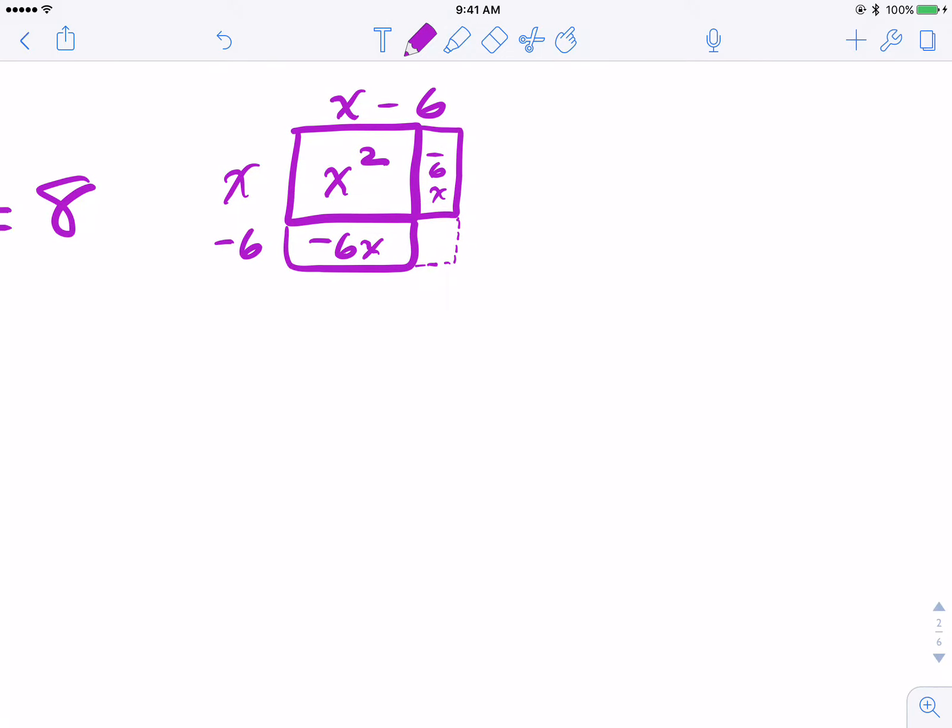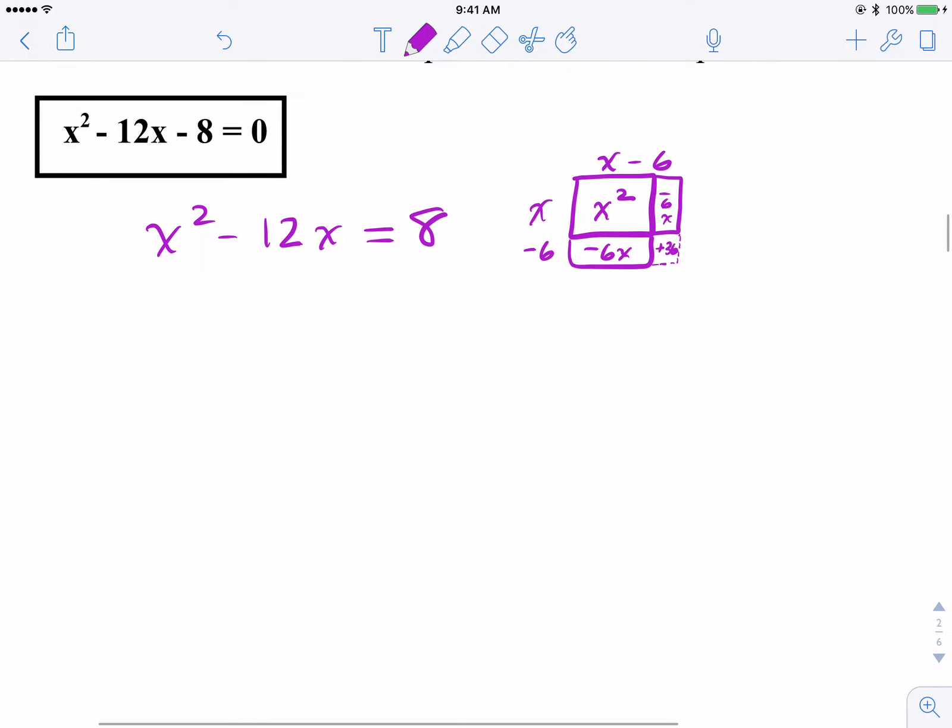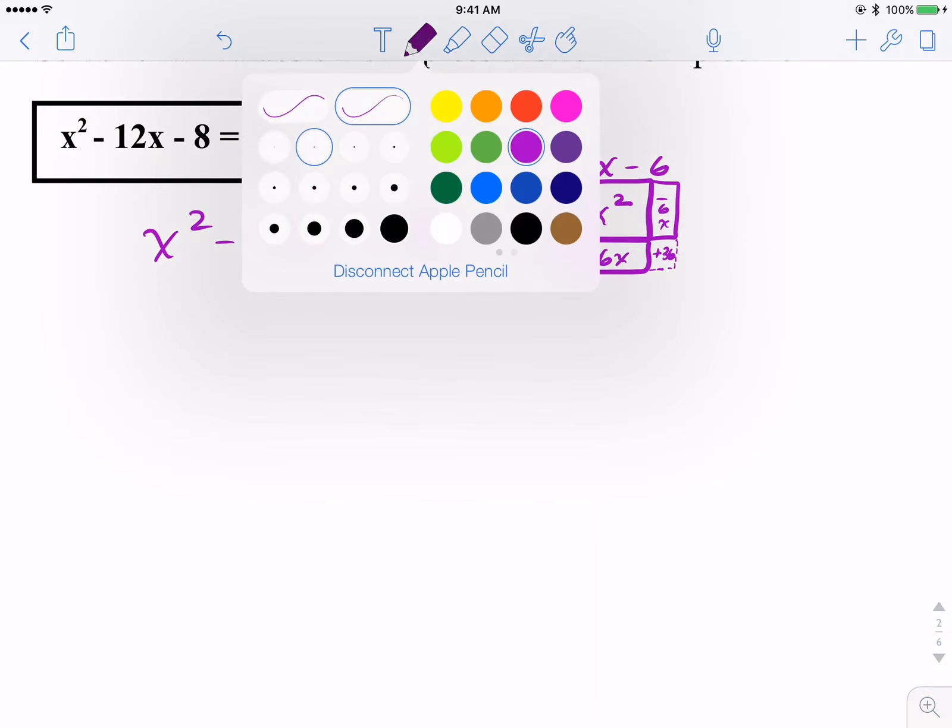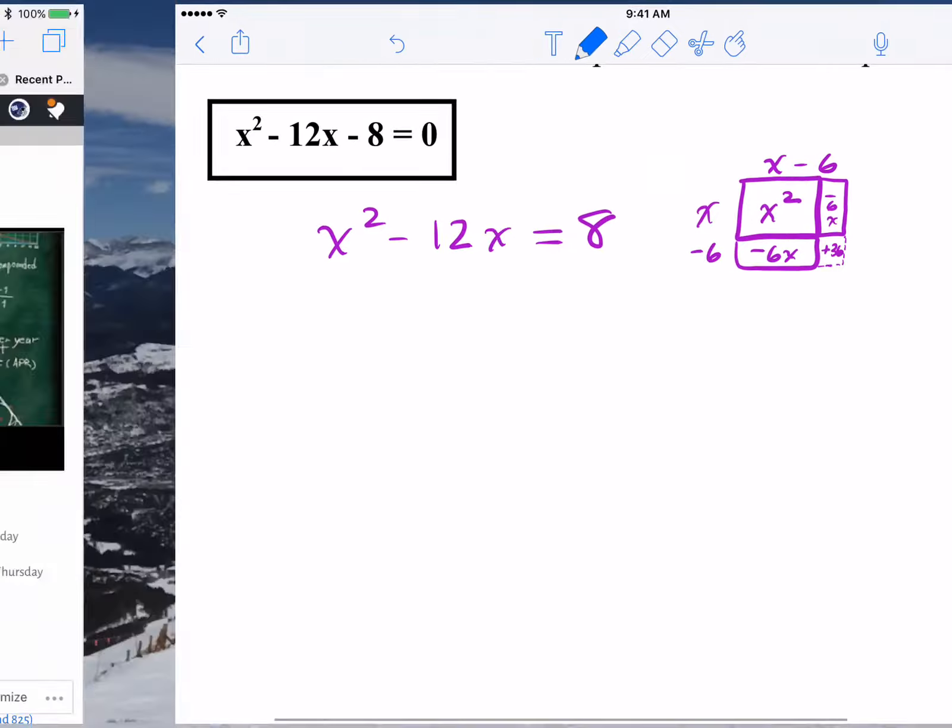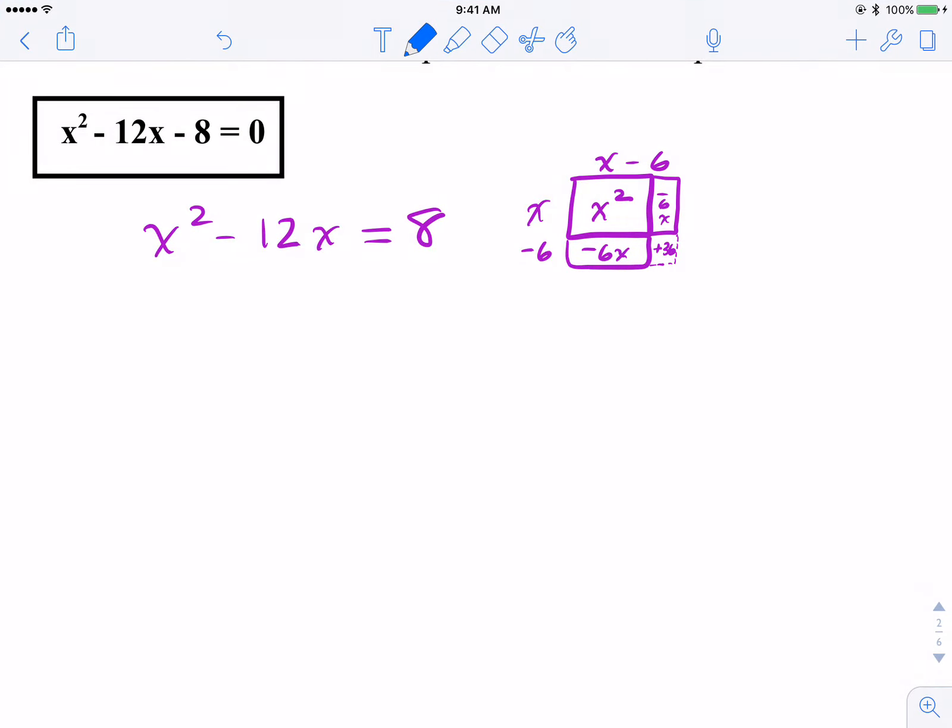So what am I missing? Negative 6 times negative 6 is plus 36. You're going to get that number if you use the algorithm, the B over 2 squared. I certainly like the visual a little bit more.